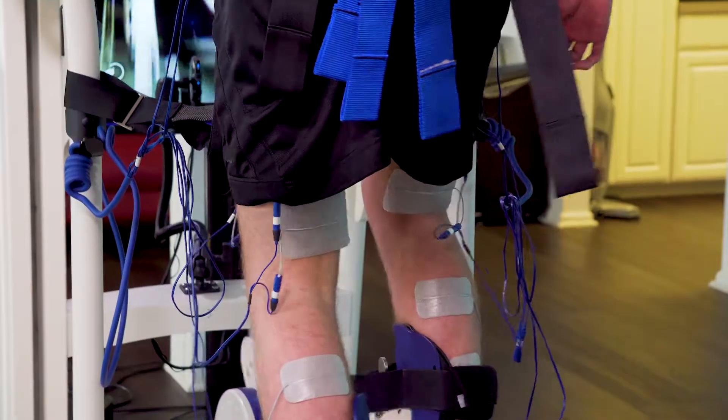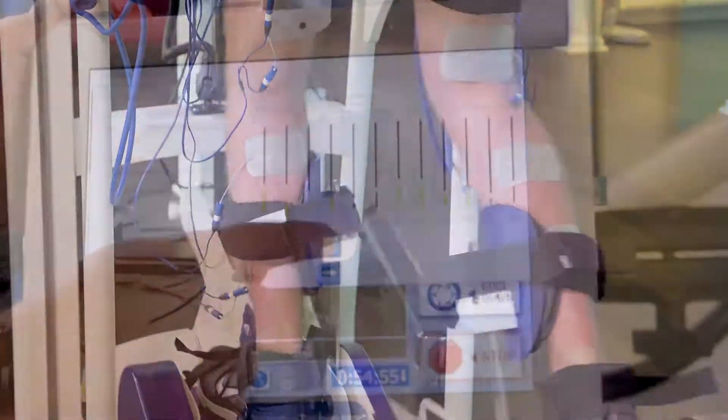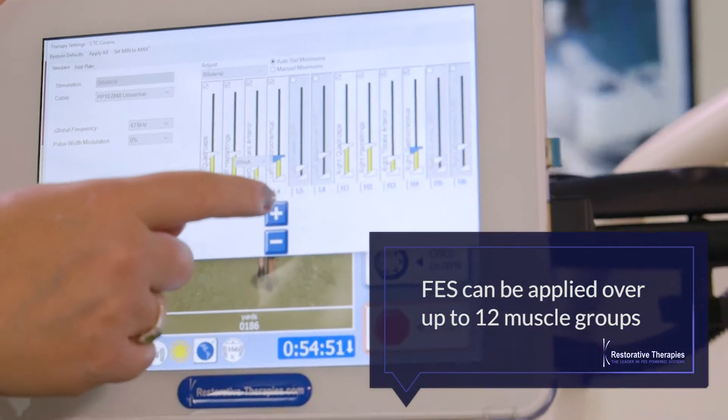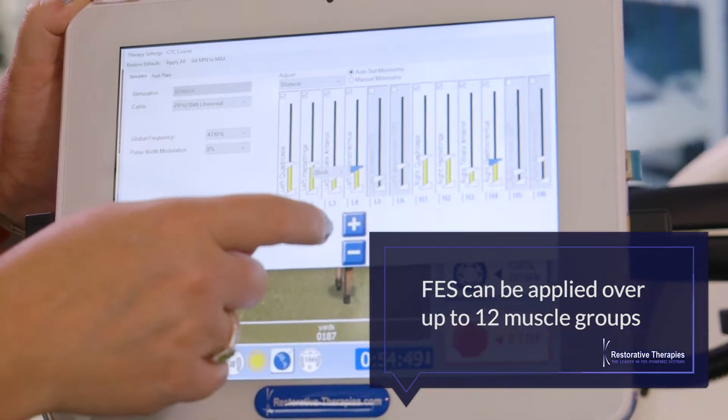The RT600 is also the only stepping system with fully integrated functional electrical stimulation that can be applied to up to 12 muscle groups.